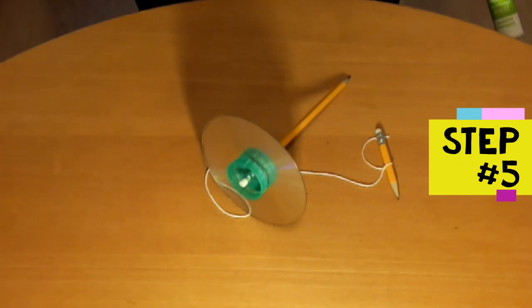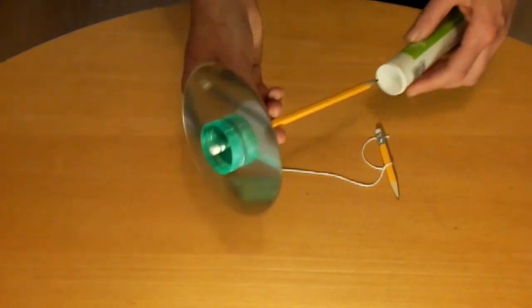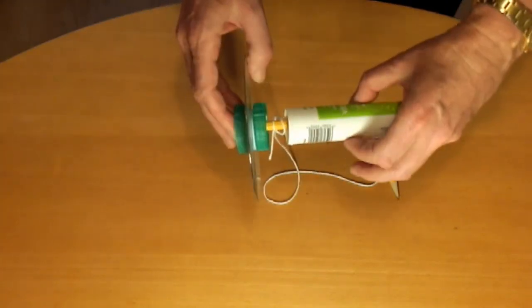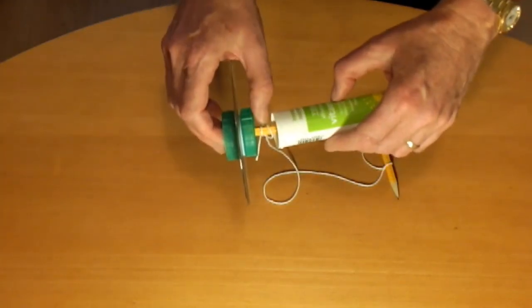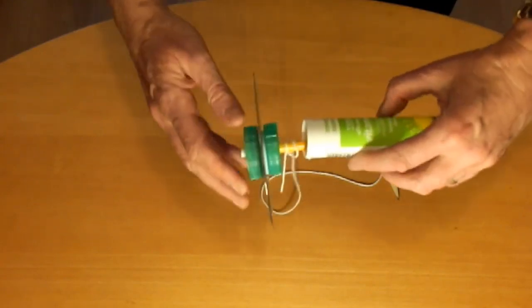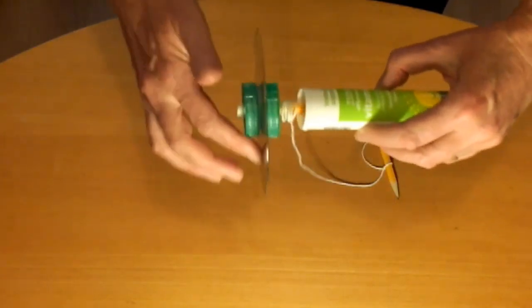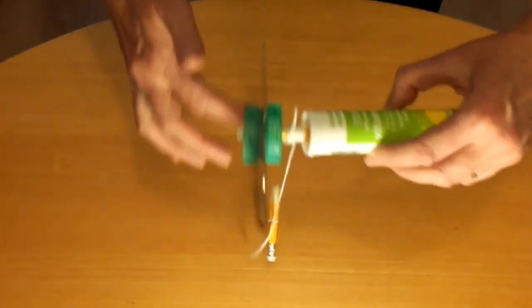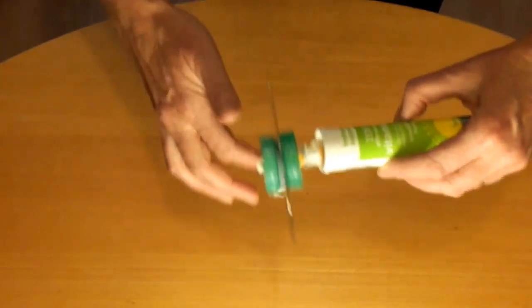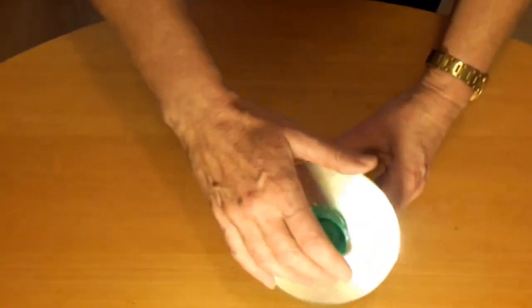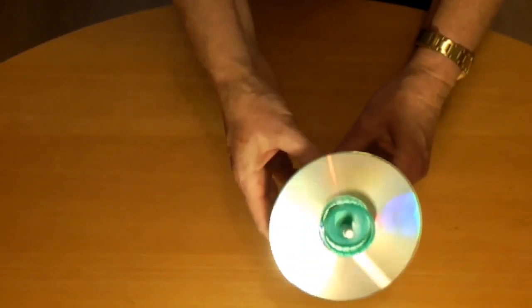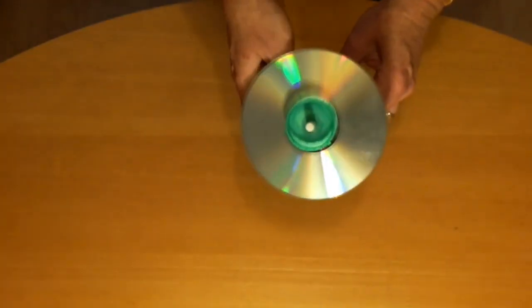Step five is to try out the spinner. Slide the long pencil into the bottle or tube. The slip knot should be about 1cm above the top of the tube. Hold the tube on its side and turn the CD with your finger to wind the string around the pencil. Hold the tube vertically and pull the handle away from the tube to spin the spindle.